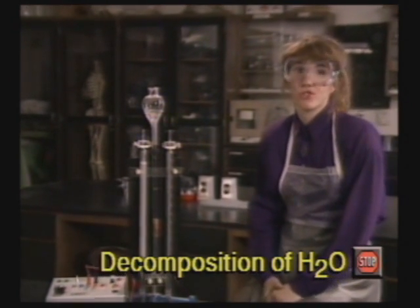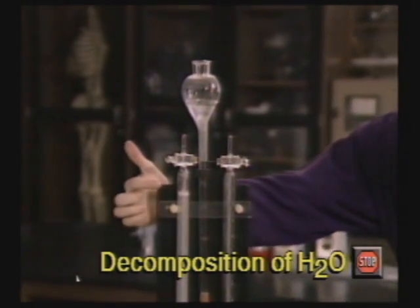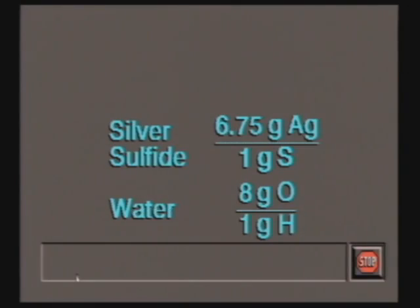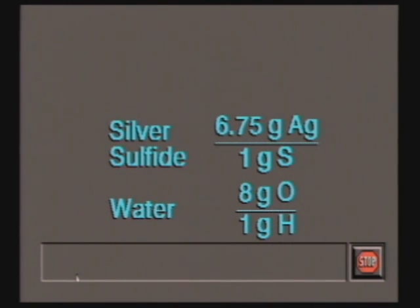Water can be decomposed by electricity into oxygen and hydrogen. The ratio of the mass of oxygen to the mass of hydrogen is always 8 to 1. The elements in a compound always combine in the same fixed mass ratios. This is called the law of definite composition.